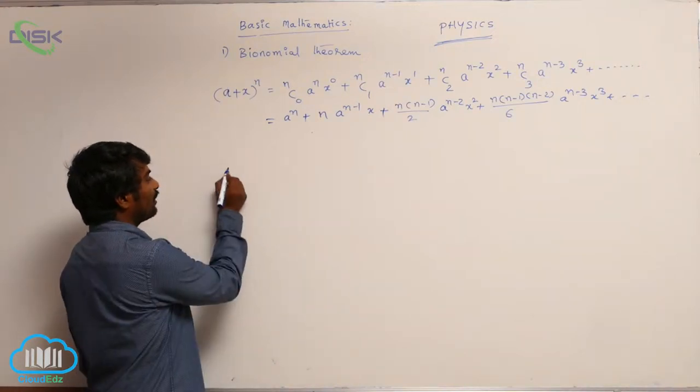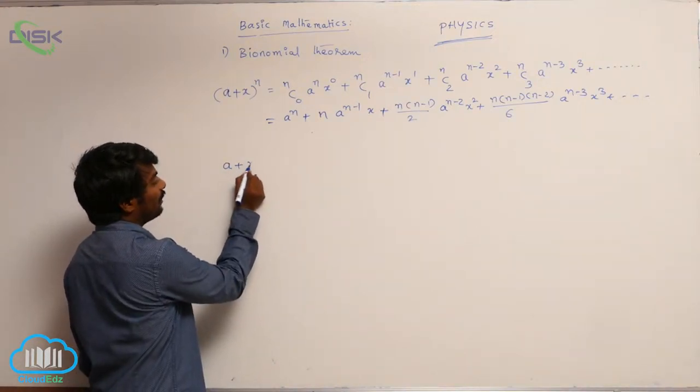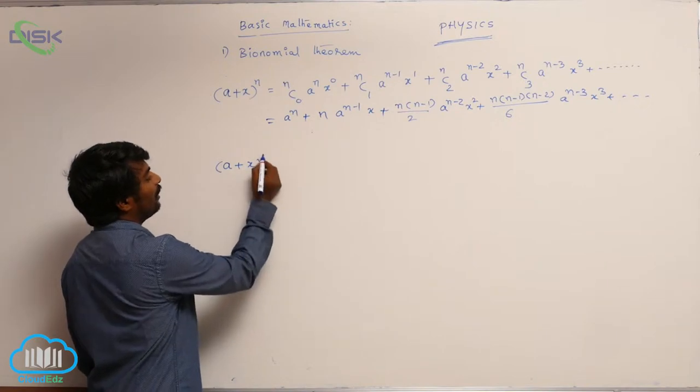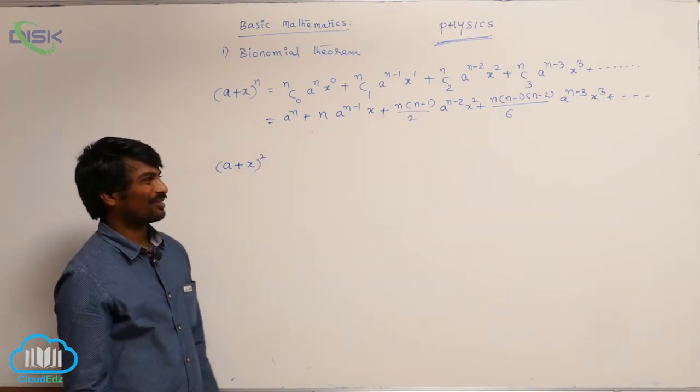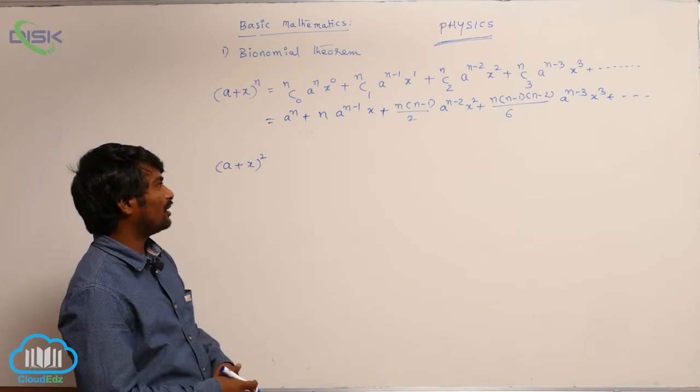Let me answer the questions that I have raised in the beginning of this topic. (a+x)^2 - how to write down this expansion by using the binomial theorem?